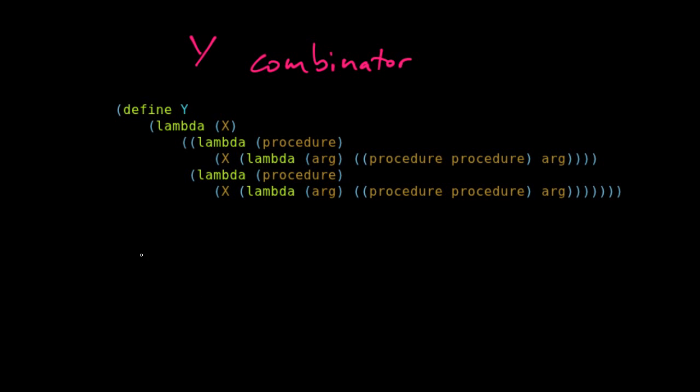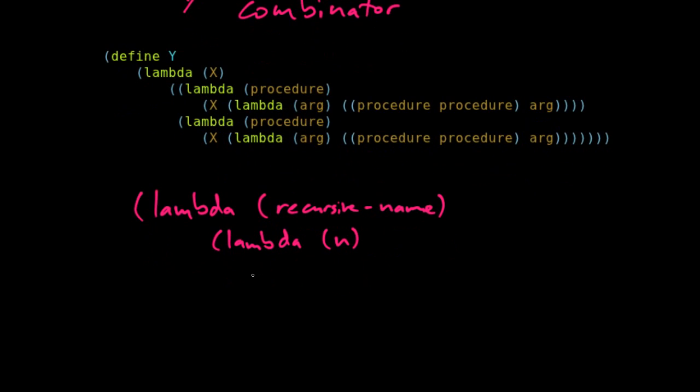Well, let's explain this with an example. So I would like to do lambda of recursive name. Then lambda of n. Then down here, I'll put the definition of factorial, but with recursive name.